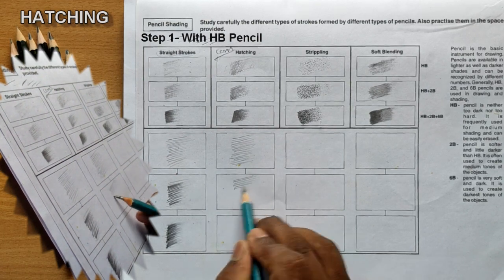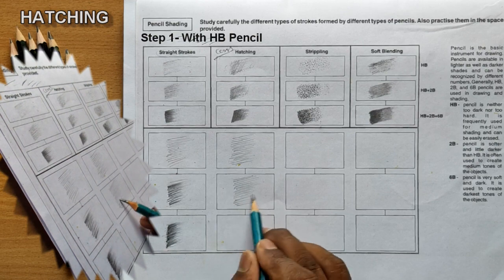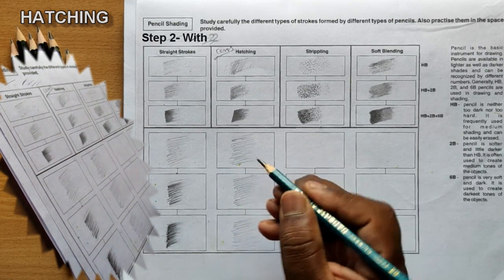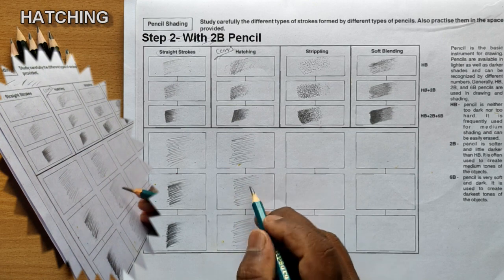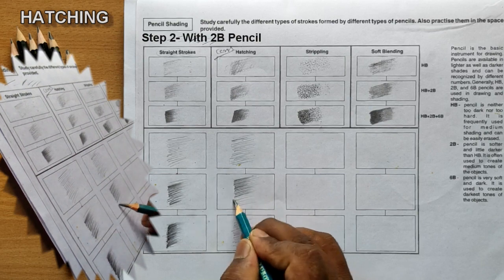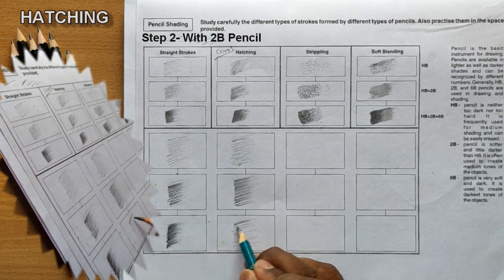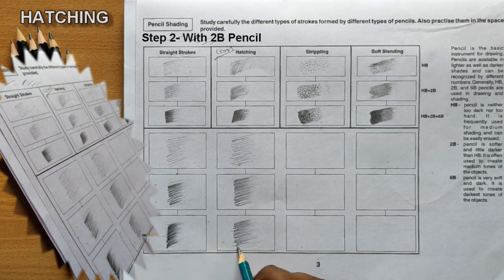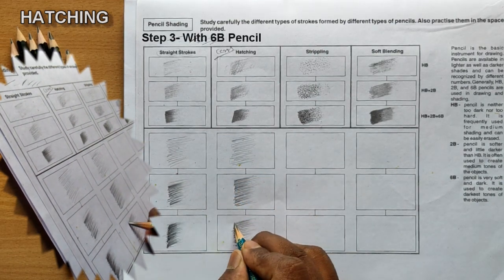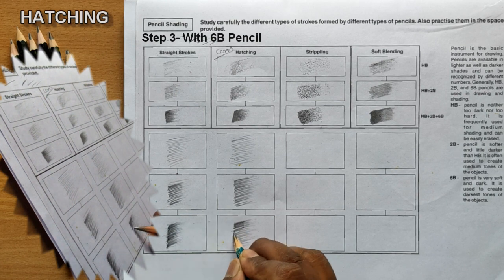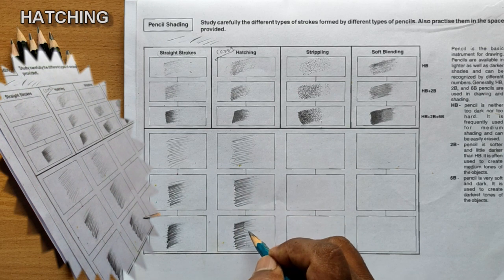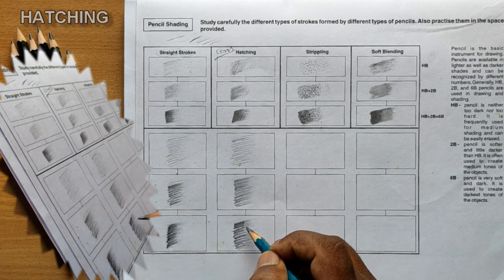The same steps are to be followed in all three boxes, as I'm showing in the first step. Take a 2B pencil, decrease the size of the line or stroke, and overlap on the first step. Then take a 6B for the third step and decrease the size of the line further. The basic difference between straight stroke and hatching is: in straight stroke we use strokes, whereas in hatching we use lines.